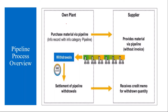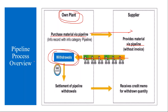This is the business process flow. We are a company, we are the plant, we need a pipeline material. You decide to purchase the material via pipeline — you inform the supplier to provide the material via pipeline. He provides the material via pipeline. Whenever required, you withdraw and consume it. That is when your liability gets created. Then you settle it regularly after a particular duration — every month, every six months, or every year. You just inform the supplier to supply the material continuously via pipeline; you consume it whenever required and periodically make the payment.